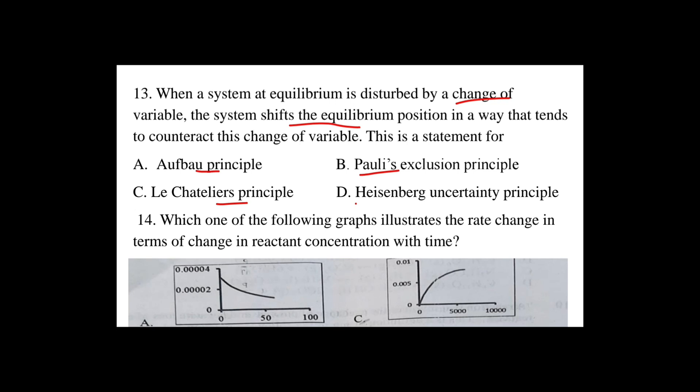The factors that affect chemical equilibrium are pressure, temperature, volume, and concentration. The variable causes the system to shift its equilibrium position to counteract the change. The correct answer is C, Le Chatelier's principle.